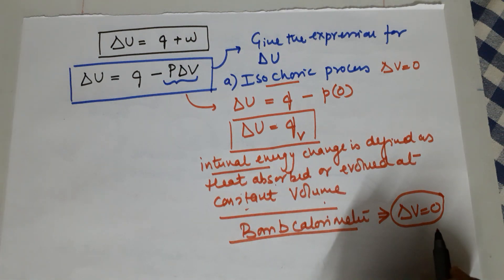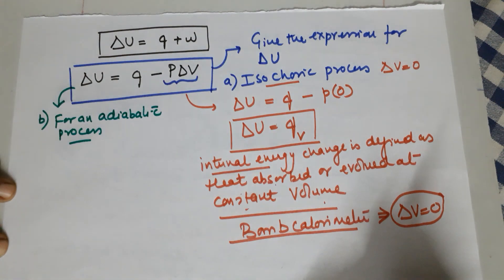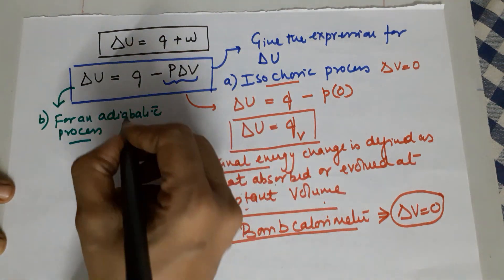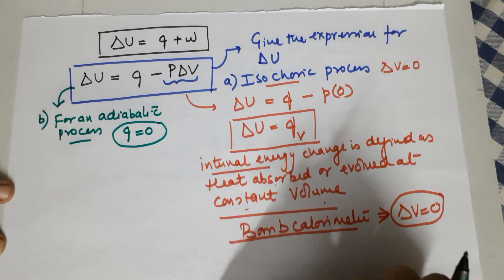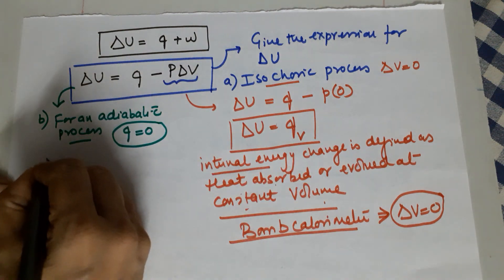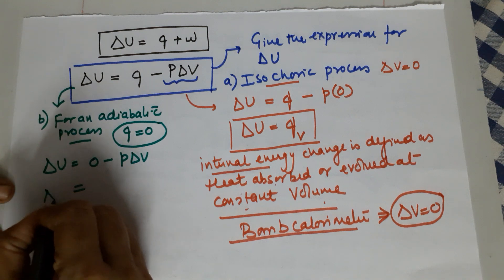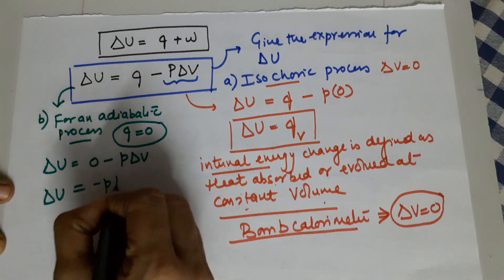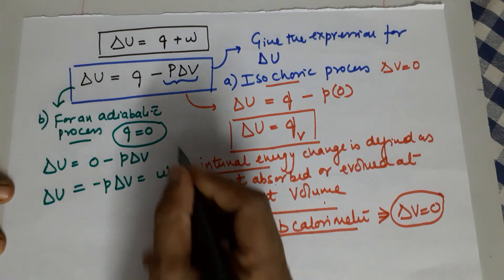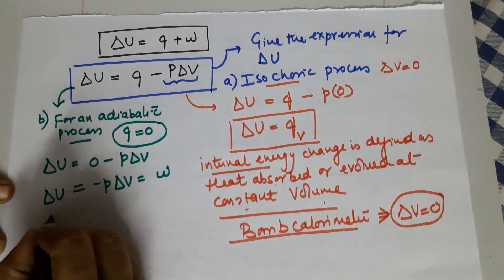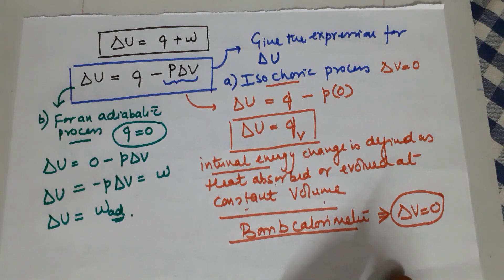For an adiabatic process (no heat absorbed or evolved, q = 0): ΔU = 0 − pΔV = −pΔV = w. So in an adiabatic process, internal energy equals the work done. Internal energy can be defined in terms of work done in the adiabatic case.